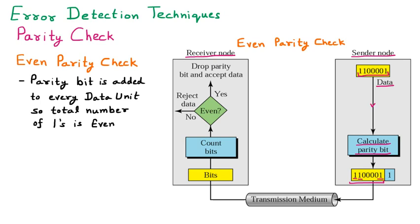So there are 3 ones, which is odd. To make this even, we need one more one. This additional one is the parity bit added with the data. This is the data and this is the added parity bit.